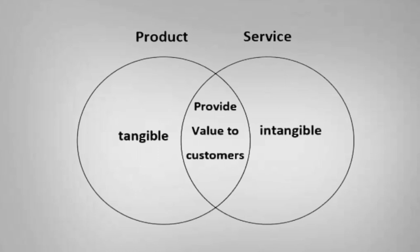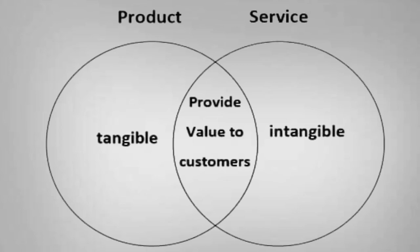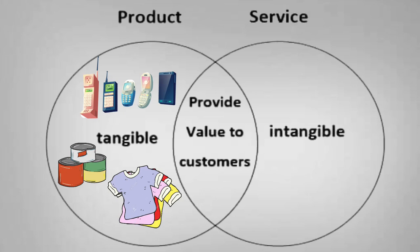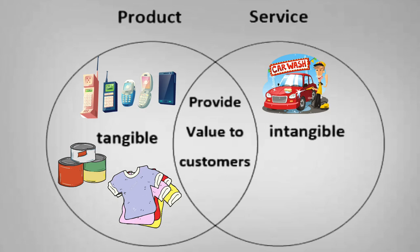The Venn diagram shows the comparison between products and services. Products are items that are tangible, such as mobiles, canned goods, and clothes. On the other hand, services are intangible — these are performed by an individual, such as car wash, massage, and tutoring. Although they are diametrically opposed, they share a commonality in that they both provide value.